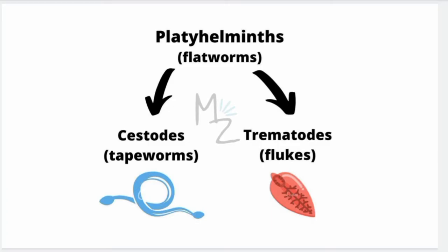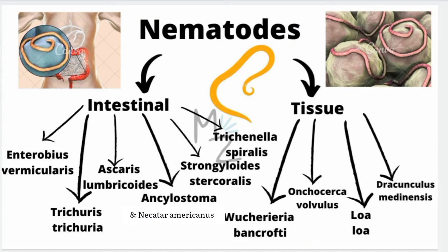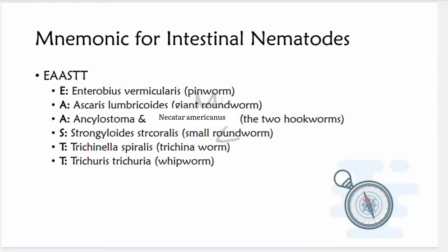Platyhelminthes (flatworms) are further classified as cestodes (tapeworms), for example Taenia saginata, and trematodes (flukes), for example Schistosoma. Nematodes are further classified as intestinal nematodes and tissue nematodes. Intestinal nematodes include Enterobius vermicularis, Trichuris trichiura, Ascaris lumbricoides, Ancylostoma and Necator americanus, Strongyloides stercoralis, Trichinella spiralis. Tissue nematodes include Wuchereria bancrofti, Onchocerca volvulus, Loa loa, and Dracunculus medinensis.